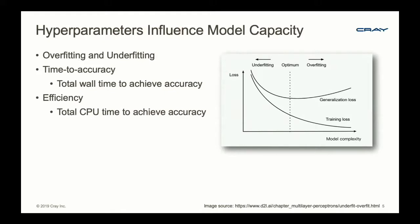So what do I mean by model capacity? It's really a general term for capturing how much we are overfitting or underfitting—both things we want to minimize. Also, our time to accuracy: how quickly we reach our desired accuracy. And related to that is efficiency—the total CPU time required to achieve that accuracy.